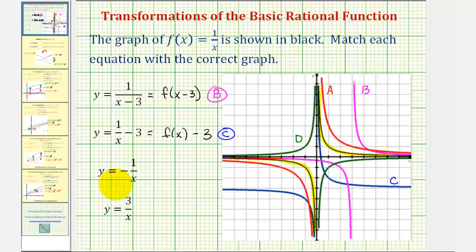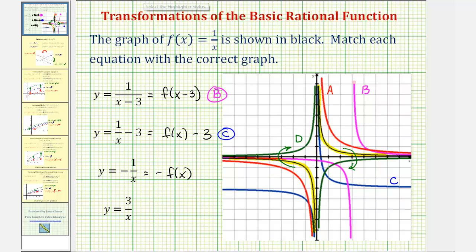Next, y equals negative one divided by x, which is equivalent to negative f of x. This function changes the sign of all the y values of the basic function y equals one divided by x, reflecting the graph across the x-axis. Starting with the basic function highlighted in yellow and reflecting it across the x-axis, we get the graph of the green function in the second quadrant and in the fourth quadrant. Therefore, y equals negative one divided by x gives us graph D, the green graph.